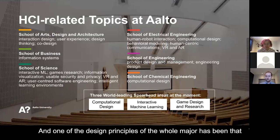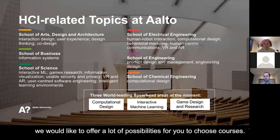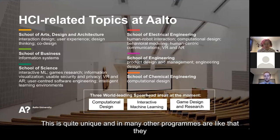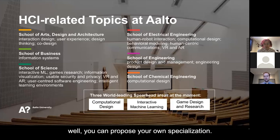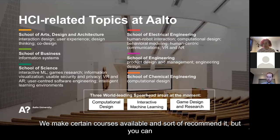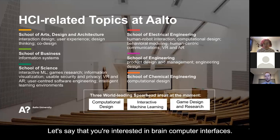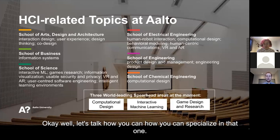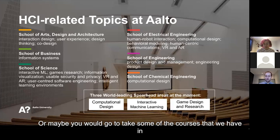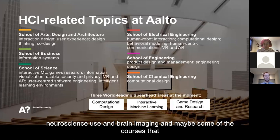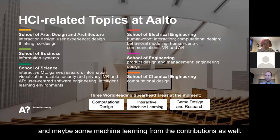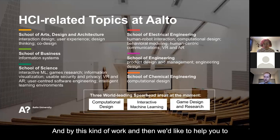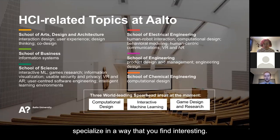One design principle of the whole major has been that we'd like to offer a lot of possibilities for you to choose courses — this is quite unique. Many other programs move like a train with no degree of freedom. We want you to be able to propose your own specialization. We make certain courses available and recommend them, but you can go around that. For example, if you're interested in brain-computer interfaces, you might take courses in neurosciences, brain imaging, sensors and measurement from the electrical engineering school, and some machine learning contributions as well.